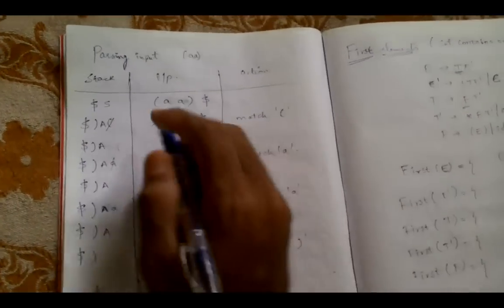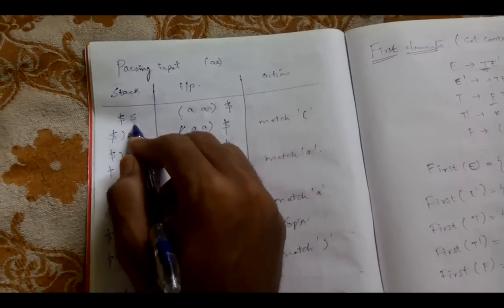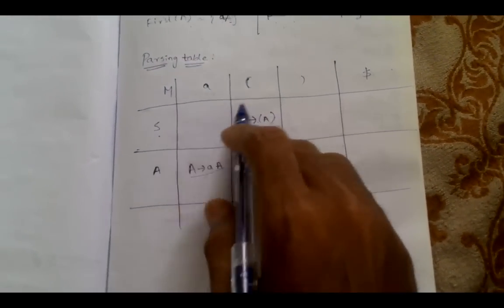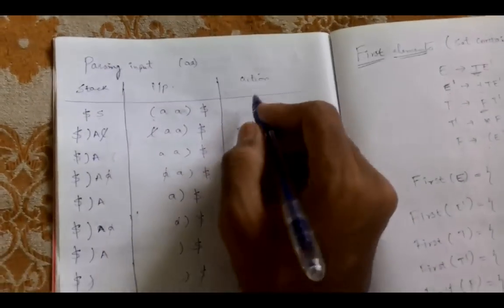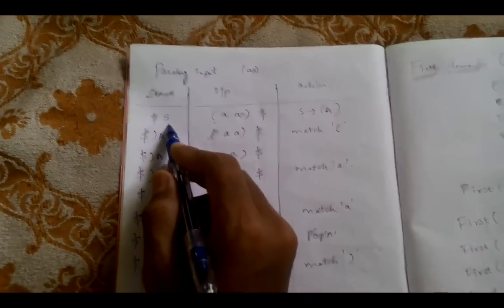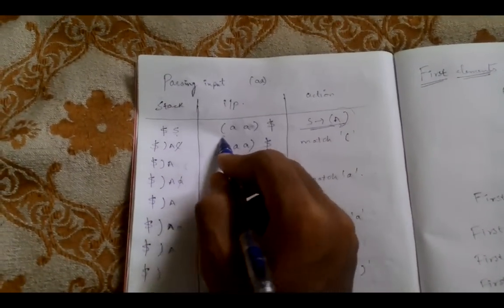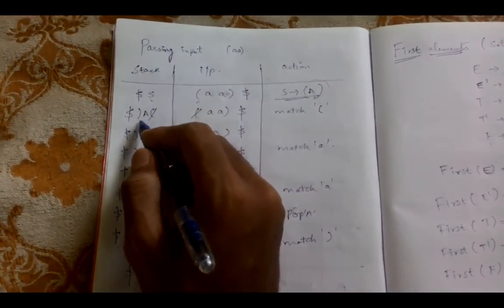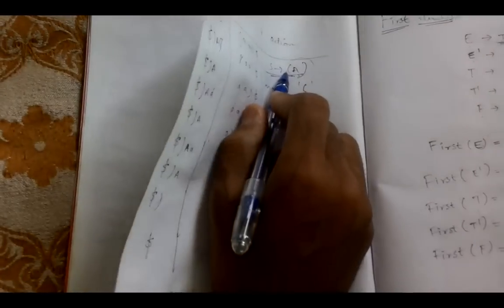Using this parsing table, we parse the given input. S on open bracket — we look in the table for the action to be performed when we encounter open bracket and the stack has S. The action is S → open bracket A close bracket. That means we pop S and push these elements into the stack, expanding S using this production. We push in reverse order so that open bracket is at the top of the stack.